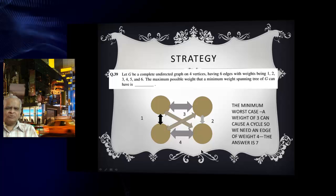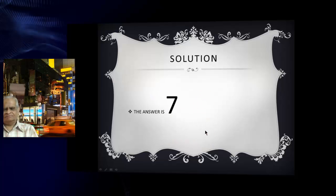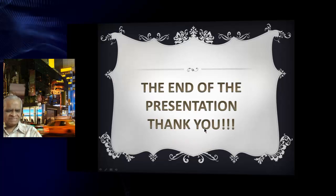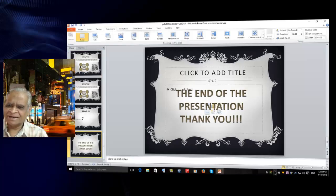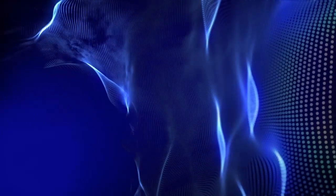If 1 is here, 2 is here. Then the maximum minimum spanning tree is 4 here or 4 here is again 7. The answer is 7. End of the presentation. Thank you very much for your kind attention.